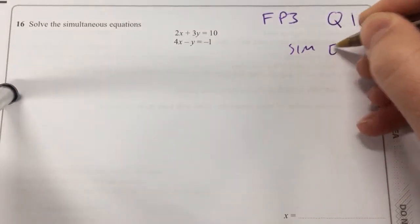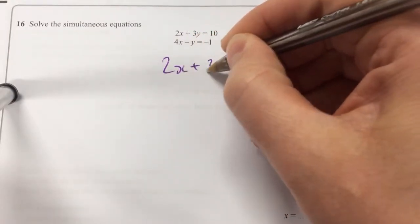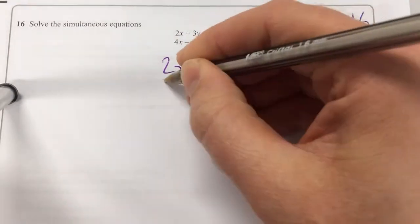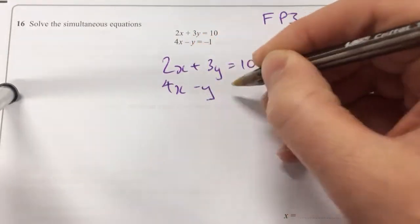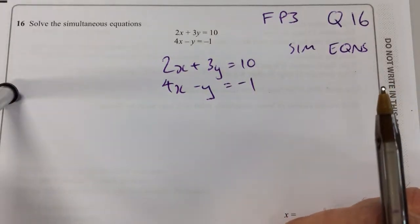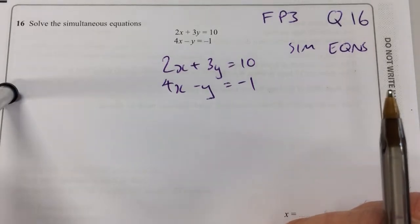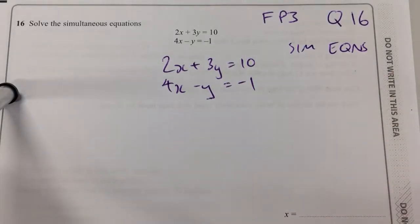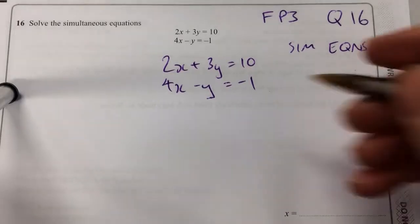It's simultaneous equations, and we have 2x plus 3y equal to 10, and 4x minus y equal to minus 1. My guest presenters are going to help me work this out. What do I have to do? I have to make the values the same, so you have to times the whole bottom equation by 3.